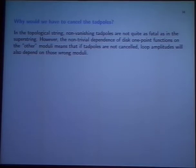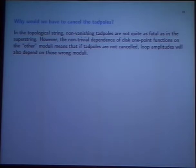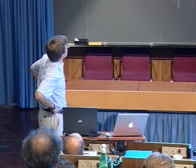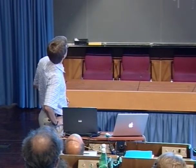You can ask the question of whether we should consider only backgrounds in which these topological charges vanish. My answer is yes. In the superstring, if you don't cancel these Ramond-Ramond tadpoles, this is really an inconsistency. In the topological string, this is not so fatal. However, since these disc one-point functions depend on the wrong moduli, if you don't cancel the tadpoles at tree level, the loop amplitudes will also depend on these wrong moduli. This is the statement of tadpole cancellation: A and B model decouple only for amplitudes with vanishing total D-brane charge.